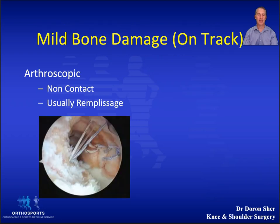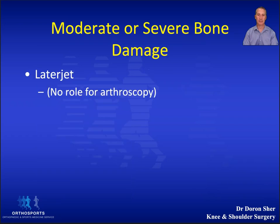The same basic rules apply when there is minor bone loss and an on-track lesion. In this case a remplissage will usually be added if there is a decent-sized Hill-Sachs lesion, but open surgery is needed for the contact athlete.